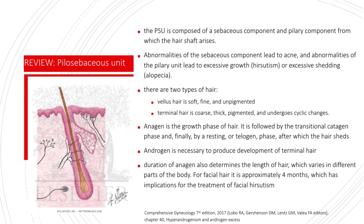Anagen is the growth phase of the hair. It is followed by the transitional catagen phase, and finally by a resting or telogen phase after which the hair sheds. Androgen is necessary to produce development of terminal hair. The duration of anagen also determines the length of the hair, which varies in different parts of the body. For facial hair, it is approximately 4 months, which has implications for the treatment of facial hair hirsutism later on during this lecture.